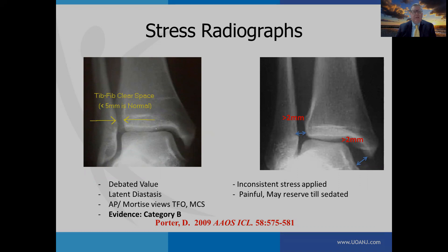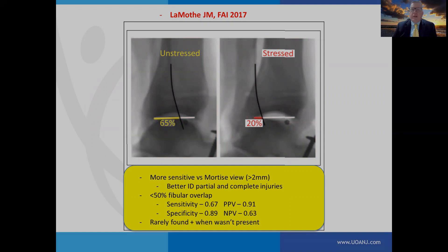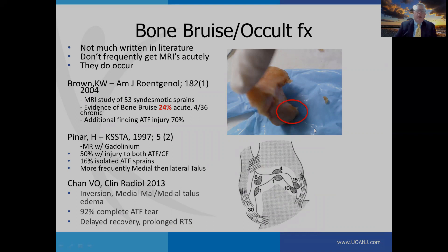Stress views are often used to rule out latent diastasis — where the ankle may appear stable but widens under stress, indicating latent versus frank diastasis. These views are generally done using the AP or mortise views, but they're painful for the patient and there's often inconsistent stress applied by examiners. Therefore, the evidence category for stress radiographs is category B. Lamath did a recent article finding the lateral view performed better than the mortise view for determining latent diastasis.